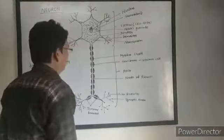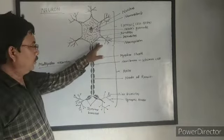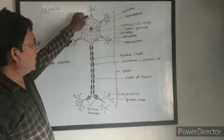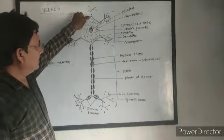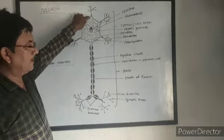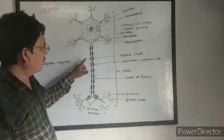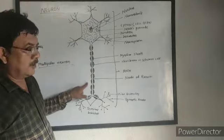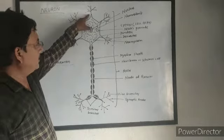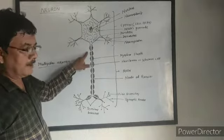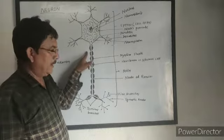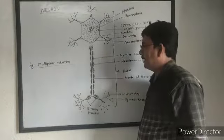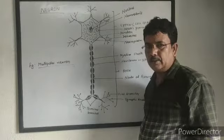In a bipolar neuron, two processes arise from the cytone. One small process is called dendron, and one long process opposite to the dendron, at 180 degrees to each other, is called axon. If the neuron has two processes, then it is called a bipolar neuron.